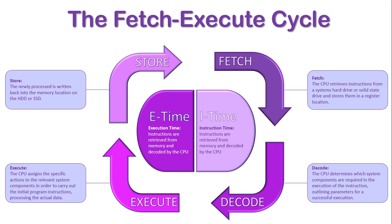The CPU is always fetching data, decoding it, executing it, storing it, and then it goes back and gets the next piece of data and does the same thing over and over. I hope this gives you a good understanding of the purpose of the Fetch-Execute Cycle and the four stages of processing data.